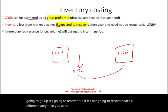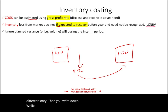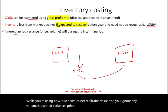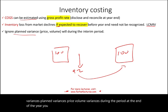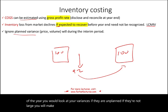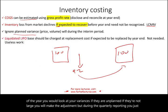Also, ignore any planned variances — price volume variances — during the interim period. At the end of the year, you look at your variances, and if they are unplanned or large, you make the adjustment. But during quarterly reporting, you just ignore planned variances.